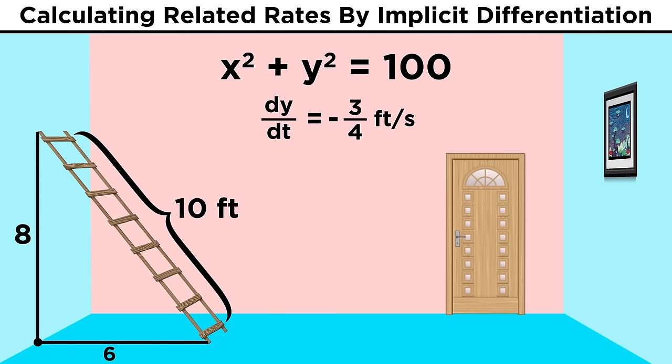We simplify, and we get negative three fourths feet per second. This is a negative value, because y is decreasing over time, as the ladder slides down the wall.